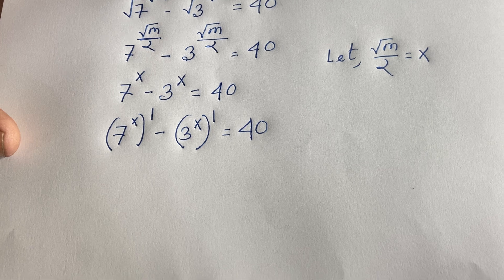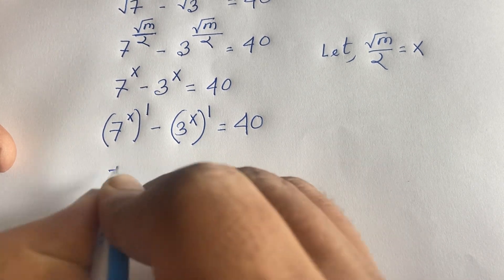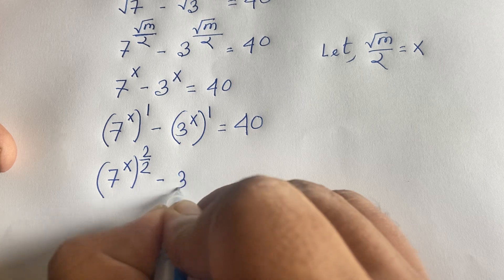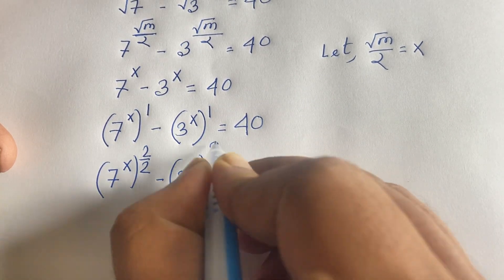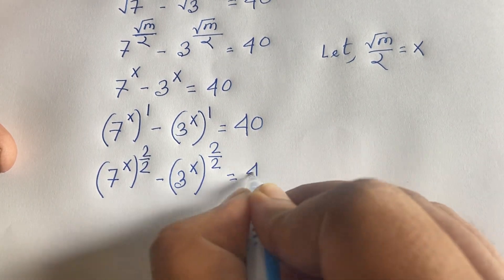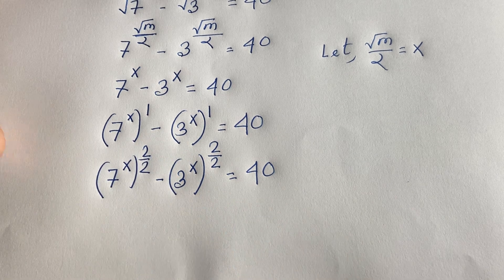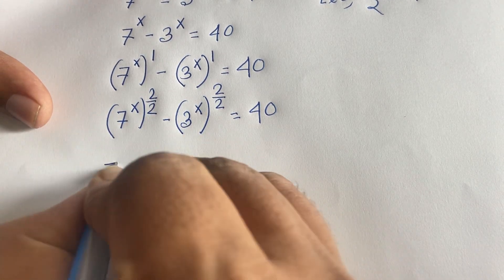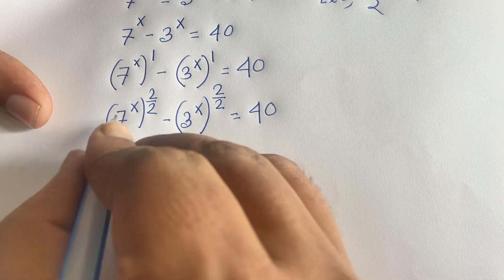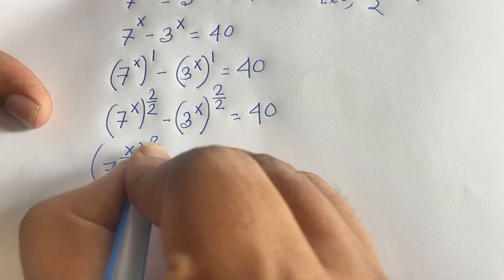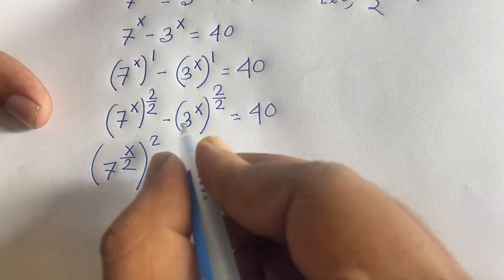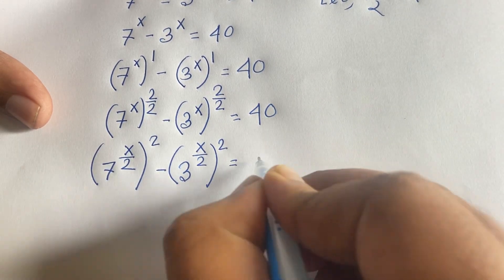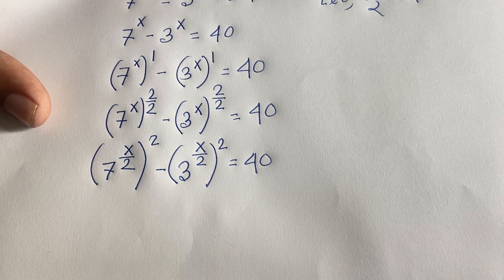The equation can be rewritten as (7^(x/2))² minus (3^(x/2))² equals 40. I applied the exponent rule, splitting x into x/2 times 2, so each base becomes a squared term: 7^(x/2) whole squared, minus 3^(x/2) whole squared, equals 40.